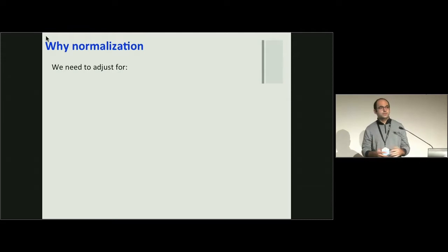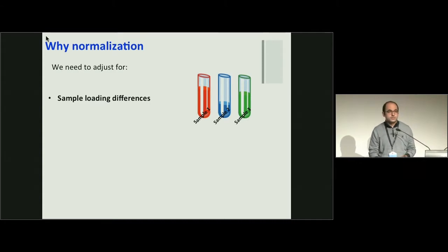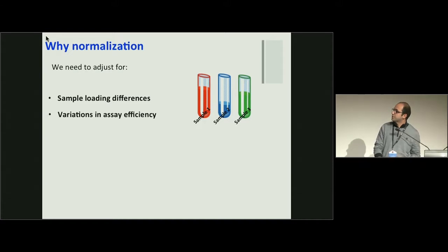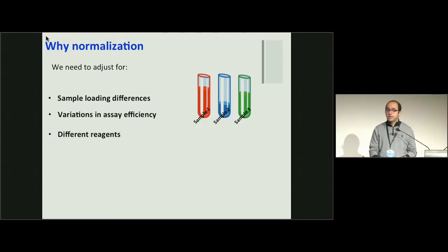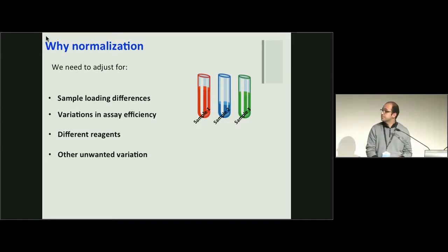When we obtain this data set, we need to get the data normalized. Why? We need to adjust for sample loading differences, which is quite common in gene expression datasets. We also need to adjust for variation in assay efficiency - using different reagents can sometimes cause batch effects and other unwanted variation.